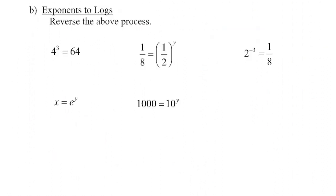Now we're given a series of exponential equations and we're going to convert those into logarithmic equations — reversing the process we previously did. Because logarithm means exponent, that's your important piece. So 3 is the exponent on base 4 that gives us the value of 64: log base 4 of 64 equals 3. Note that the 4 needs to be written as subscript — below your line — we are not multiplying. The order doesn't matter; both forms are equivalent.